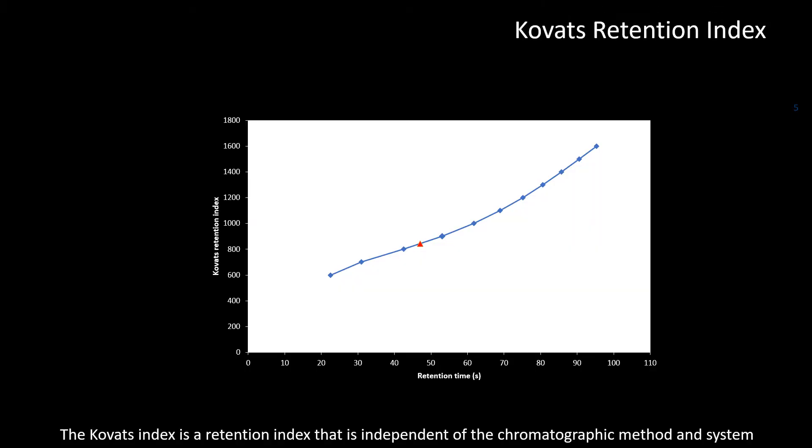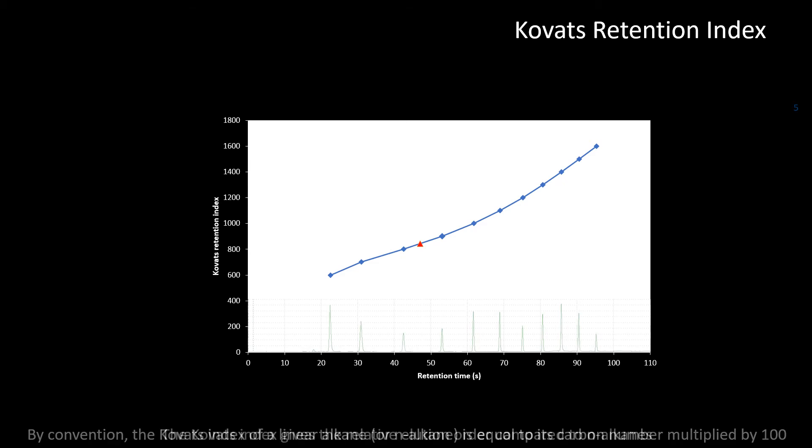The Kovats index is the retention index that is independent of the chromatographic method and system. On a specific type of column phase, the molecules are always eluted in the same order. The Kovats index gives the relative elution order compared to n-alkanes. By convention...